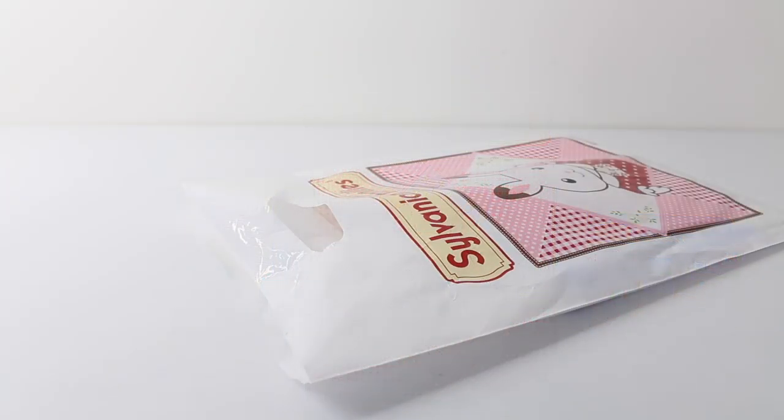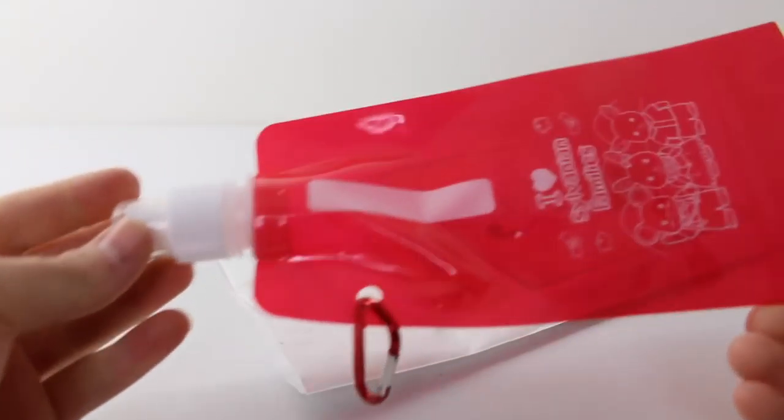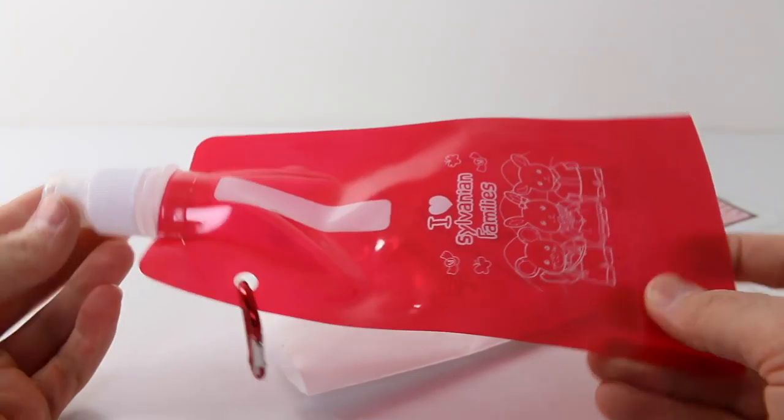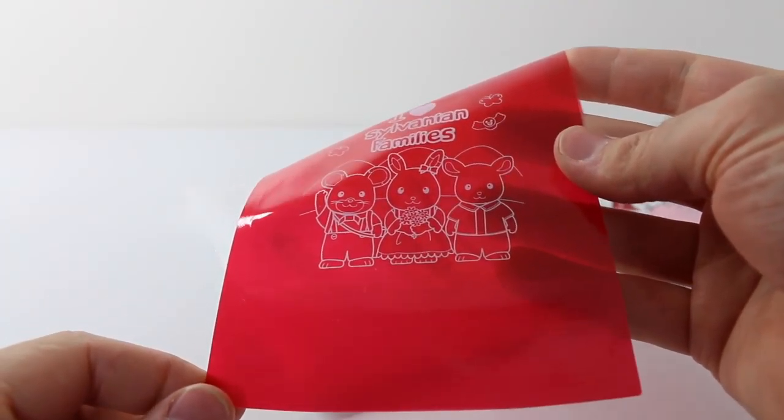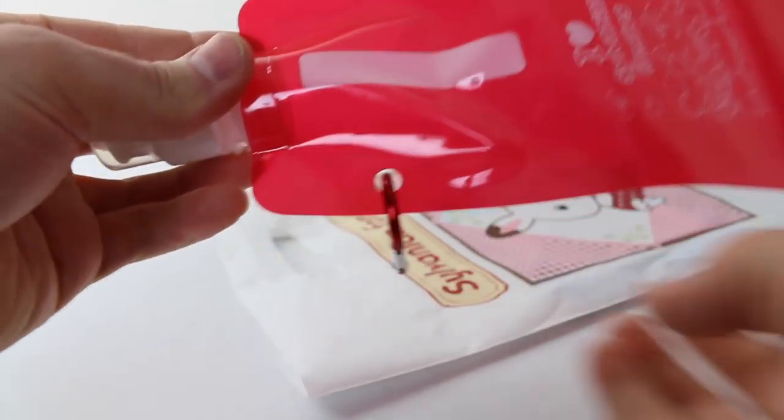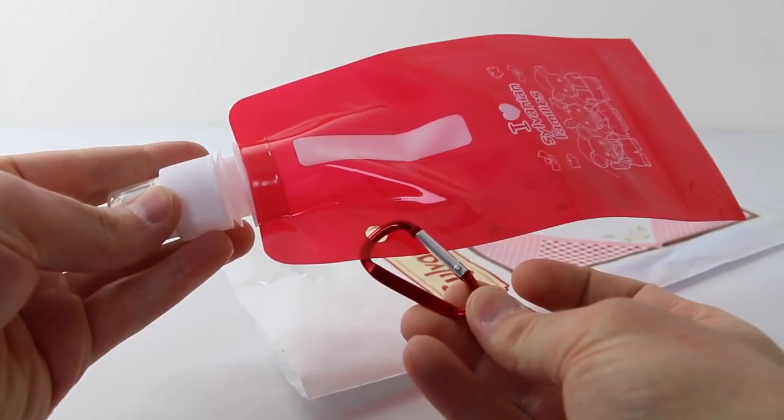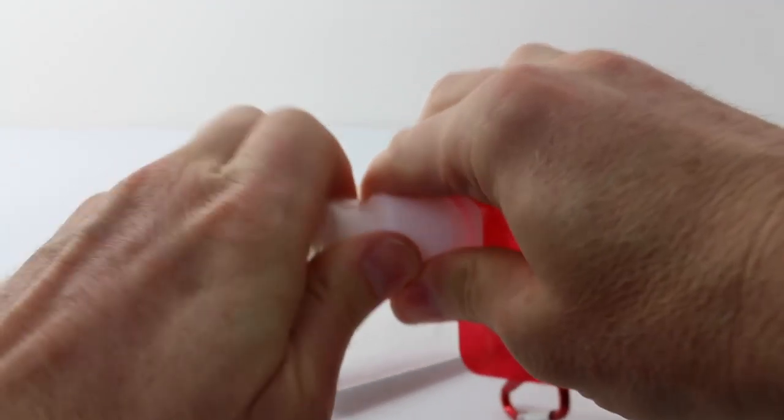Before we check out the Dentist set I'll show you what's inside this gift bag. And the first thing is this drink bottle and it says I love Sylvanian families and we have some cute little critters on the front there. And on the side we also have a carabiner which you can clip to things. At the end it has a protective cap.